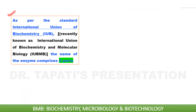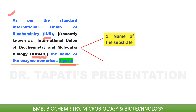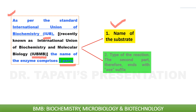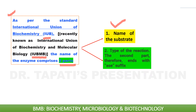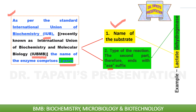As per the standard International Union of Biochemistry, IUB, which is recently known as International Union of Biochemistry and Molecular Biology, that is IUBMB, the name of the enzyme comprises two parts. The first part is associated with the name of the substrate catalyzed by the enzyme, and the second part is associated with the type of the reaction catalyzed by that enzyme. The second part ends with the suffix '-ase'. You will understand how the name of the enzyme comprises two parts through an example.